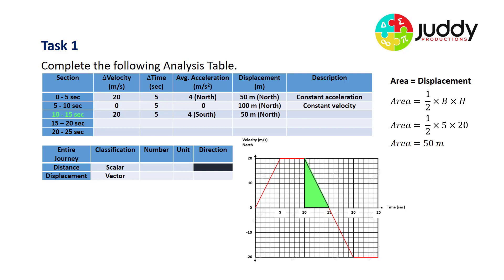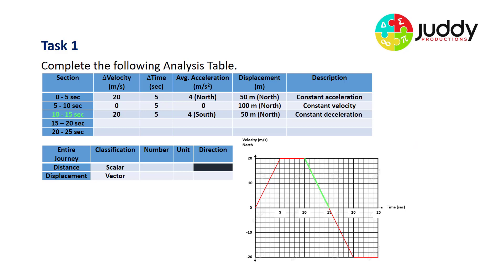The area underneath that section is a triangle above the x-axis, so whilst we are slowing down there is still a positive displacement. That triangle gives a displacement of 50 meters to the north. In reference to the northerly direction, this is constant deceleration.